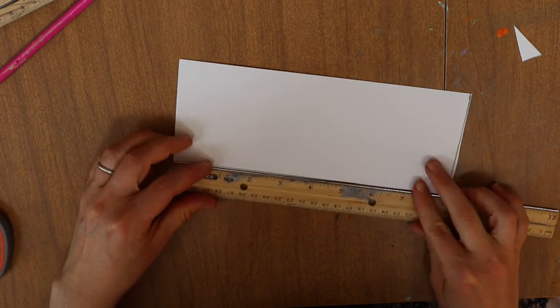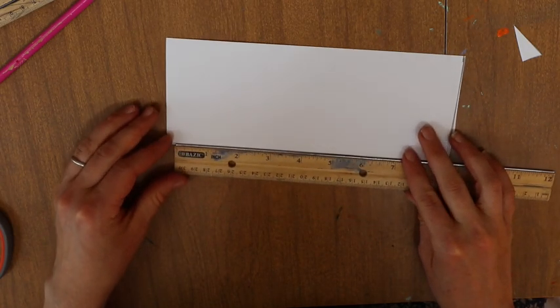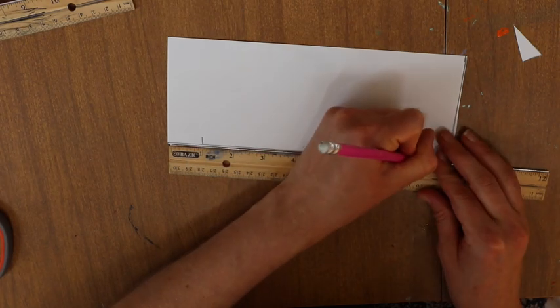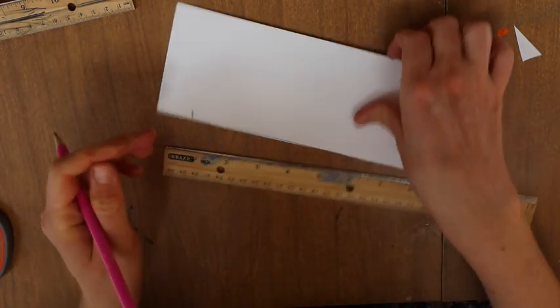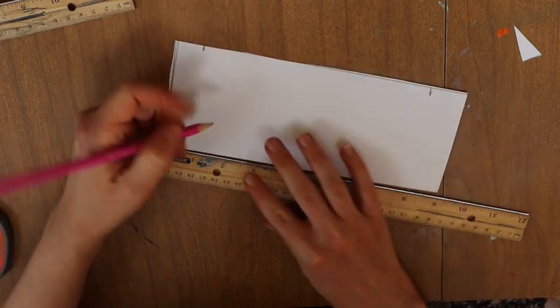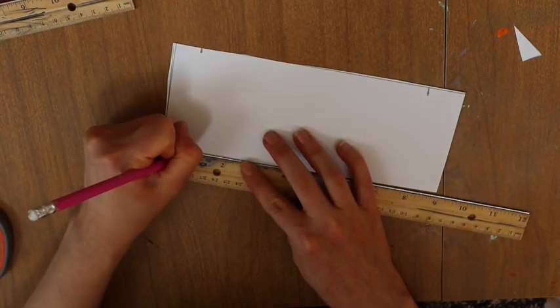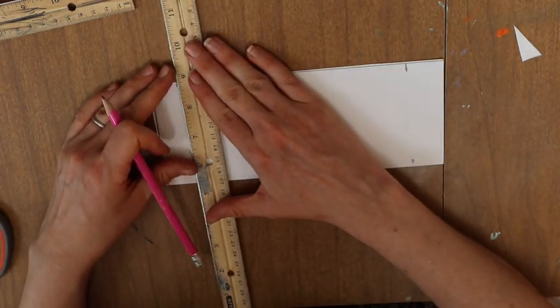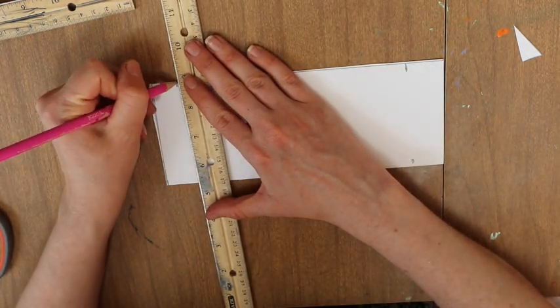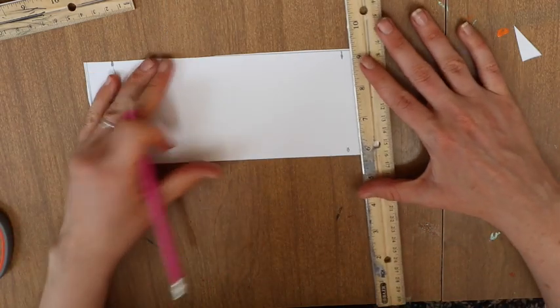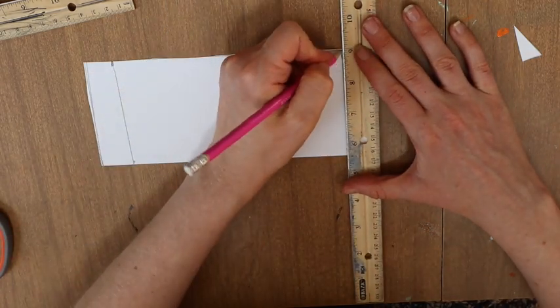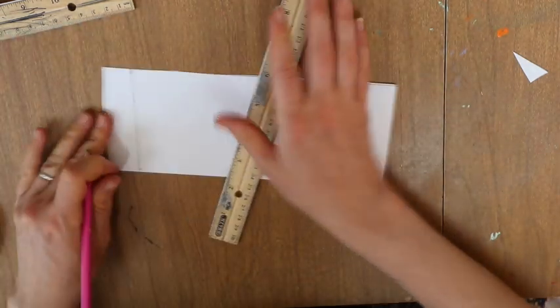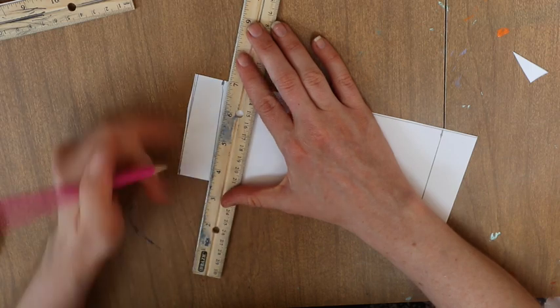All right, so now we're going to place dots along the top and the bottom at one and eight inches. Here's one and here's eight. Dots. Here's one and here's eight. And now we're going to draw lines.